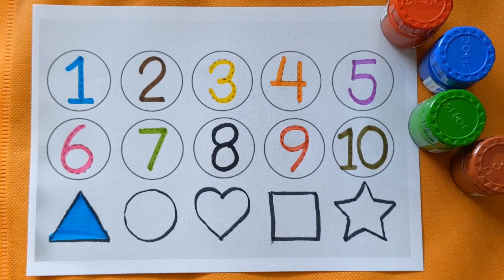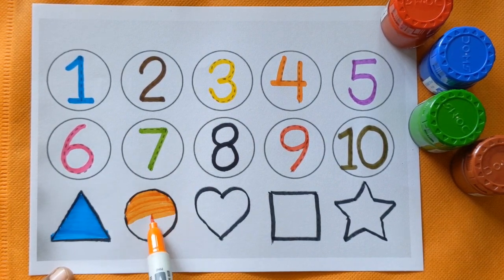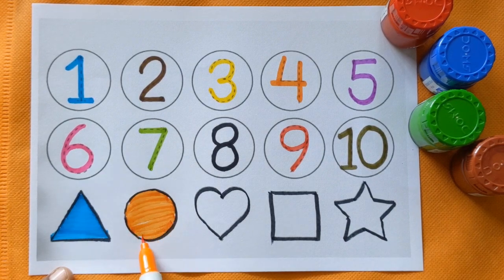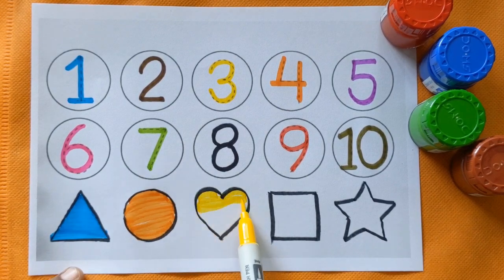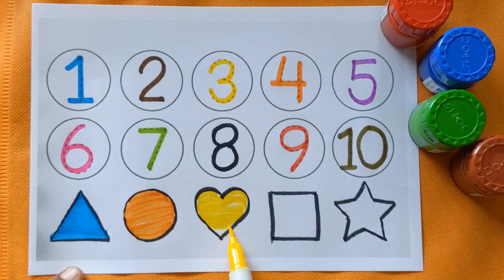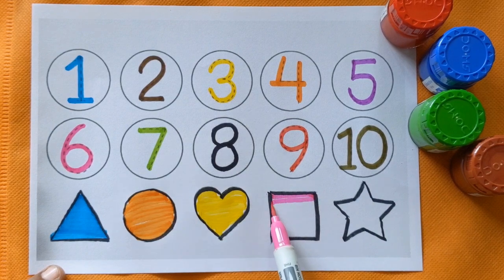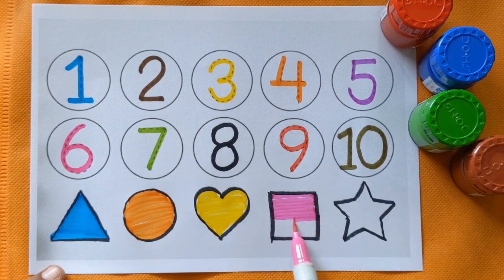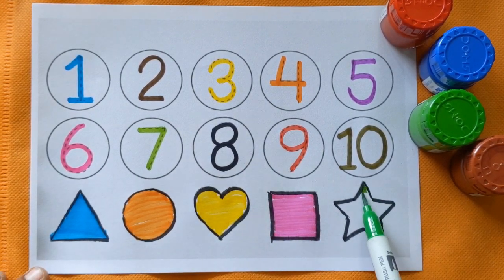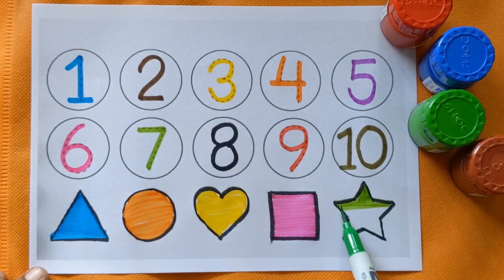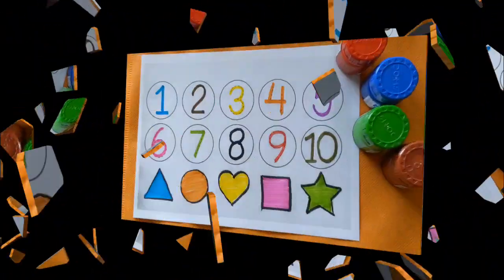Triangle, sky blue color. Circle with orange color. Heart, yellow color. This is square pink color. And star, light green color.